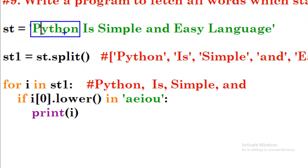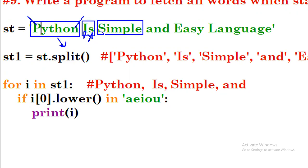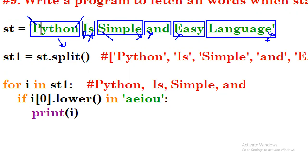In a word, the starting must be a consonant and the ending also must be a consonant — that's the word I want in the result. For example, 'is' — the starting is not a consonant so I don't want it. 'Simple' — the starting consonant is there but ending is not a consonant, so it is not required. 'Under' — starting is not a consonant, not required.